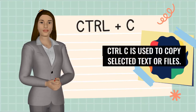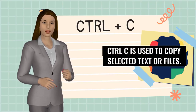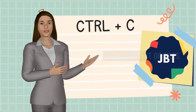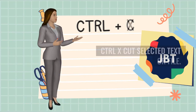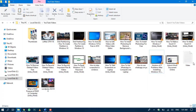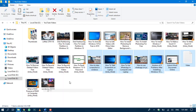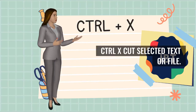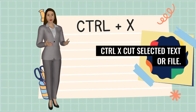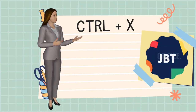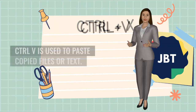Number 3 is Ctrl C. Ctrl C is used to copy selected text or files. Number 4 is Ctrl X. Ctrl X cuts selected text or file.